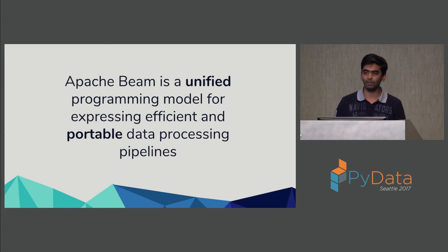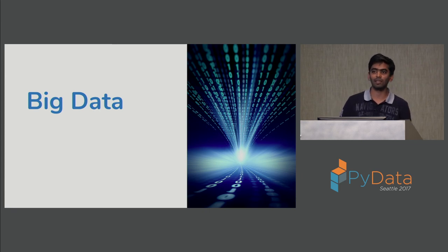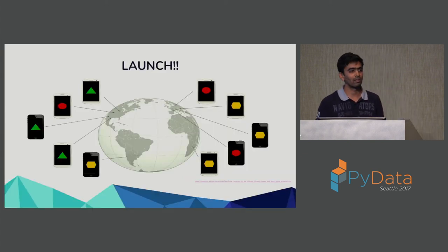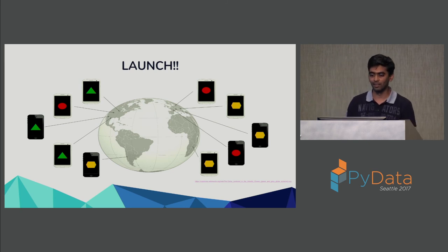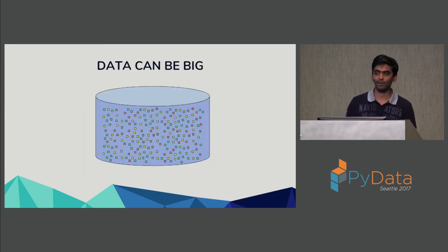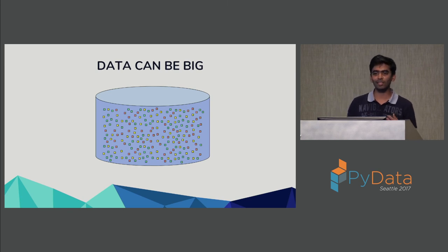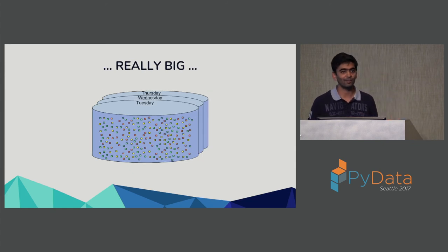Let's talk about what kind of data we see in today's use cases and how different data processing jobs make trade-offs. Let's say you were a mobile gaming company that launched a game called Geometry Crush, where people click on different geometrical shapes to earn points. This game becomes really popular, and all across the globe people are playing it on planes, trains, and buses.